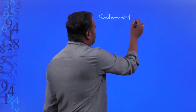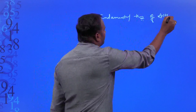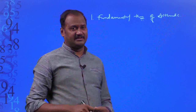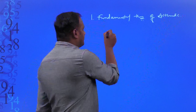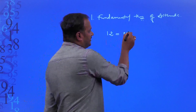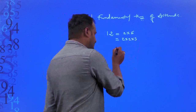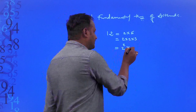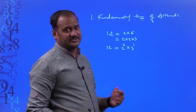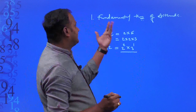What is the fundamental theorem of arithmetic? It means that if you consider any composite number — for example, 12 — this composite number can be factorized as 2 × 6 = 12, or 2 × 2 × 3 = 12. You can write it as 2² × 3¹ = 12. So we factorized a composite number as the product of different prime numbers in a unique way. That is the fundamental theorem of arithmetic.